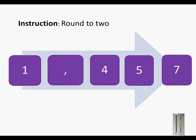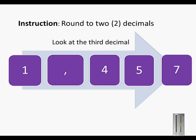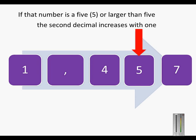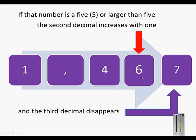If the instruction is round to two decimals, you will again look at the third decimal — in this case that seven. The number is 1.457. Because this seven is larger than five, the second decimal will increase with one and the third decimal will disappear. So 1.457 will be rounded to 1.46.